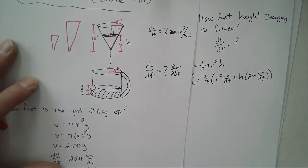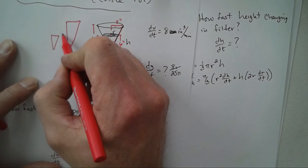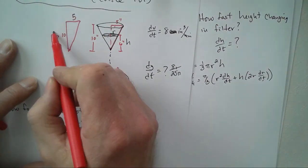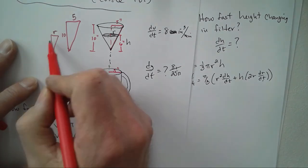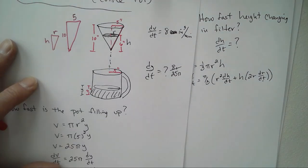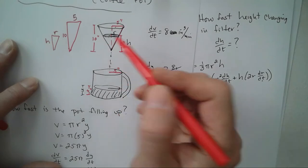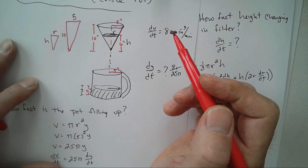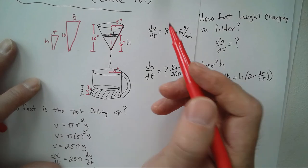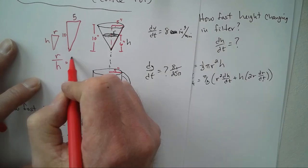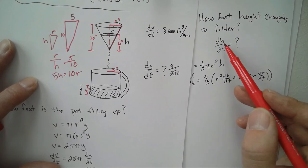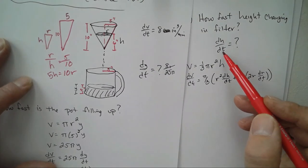Alright, I know that this is 10 and this is 5, when this is r and this is h. And these two triangles are similar because they're the same shape, they have the same angles. So we could say, you know, back into our geometry days, r over h is to 5 is to 10.